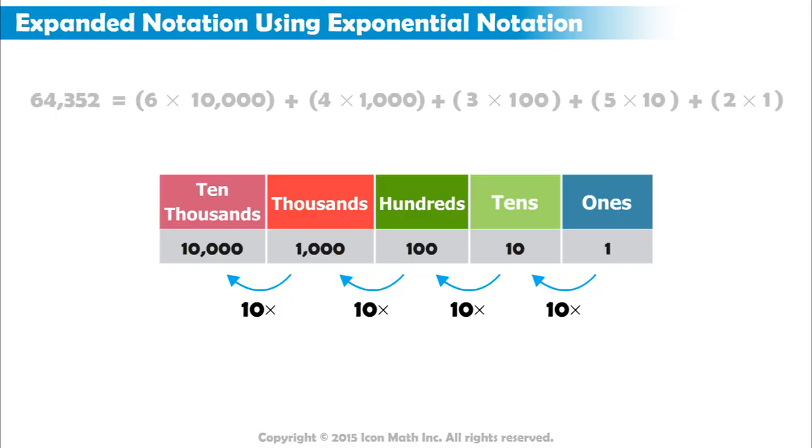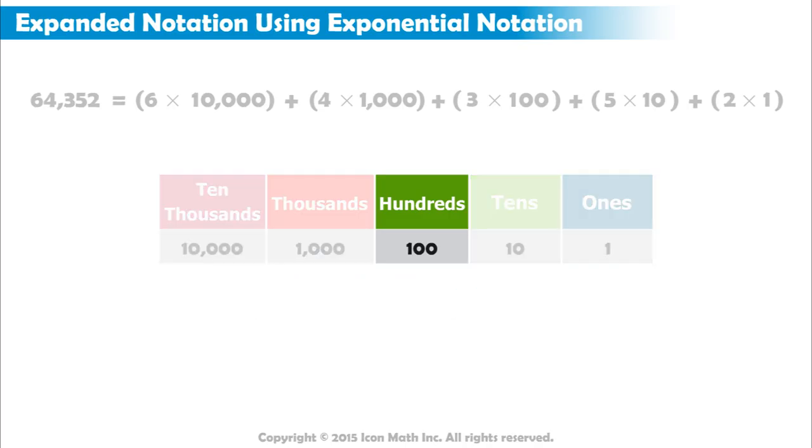Using this information, we can rewrite each place value in exponential notation. Let's start with the hundreds place, which has a value of 100. 100 equals 10 times 10, so 100 is equal to 10 to the power of 2. 1,000 is 10 times greater than 100, so it equals 10 times 10 times 10, or 10 to the power of 3.